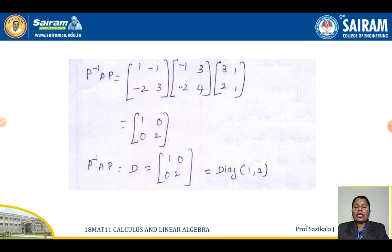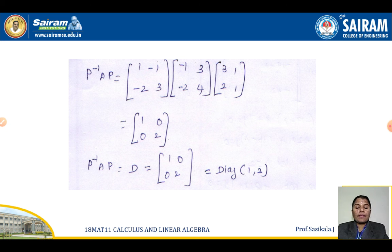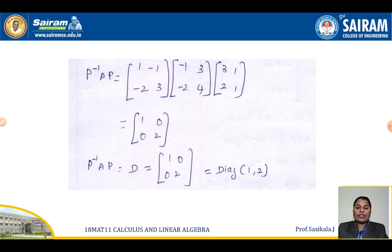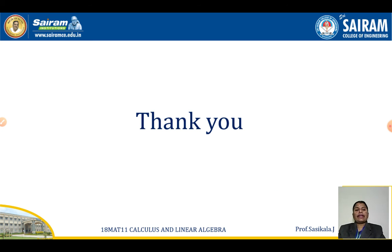Now compute the diagonal matrix using P⁻¹AP. Substituting P⁻¹, A, and P gives the diagonal matrix [[1, 0], [0, 2]]. The diagonal entries are the eigenvalues 1 and 2, which verifies the result. The diagonal matrix must contain only diagonal entries, and those entries must be the eigenvalues of the original matrix.